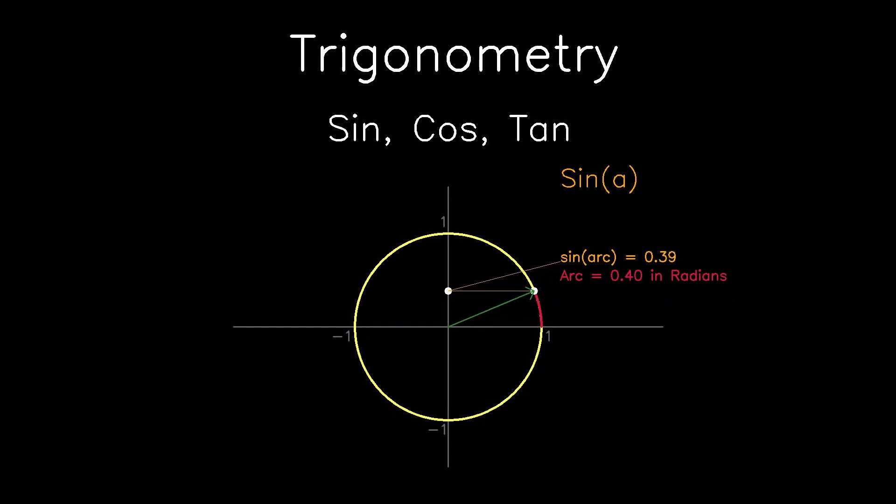Sin is a function that takes in the arc length and outputs the y-coordinate. So it's obvious that it has to be positive in the first and second quadrant, and it will be negative in the third and fourth quadrant.